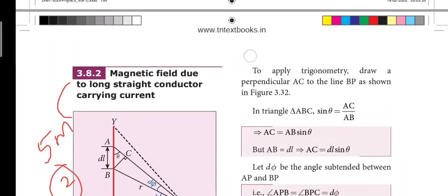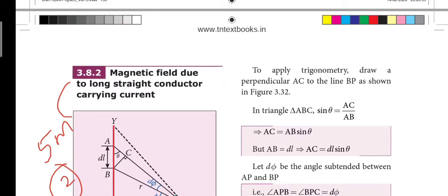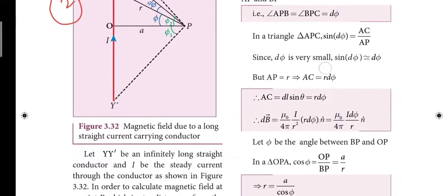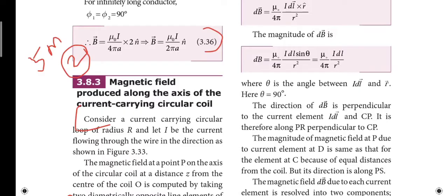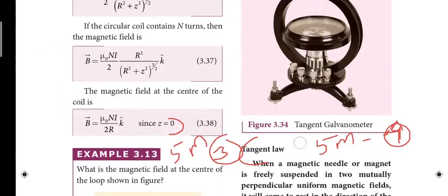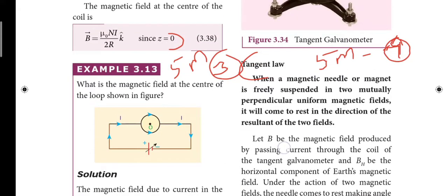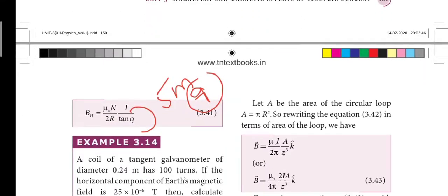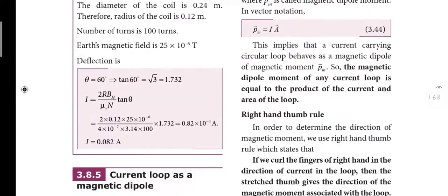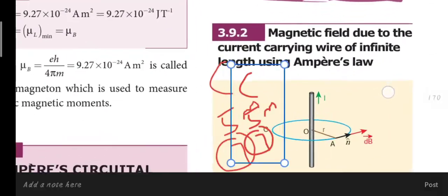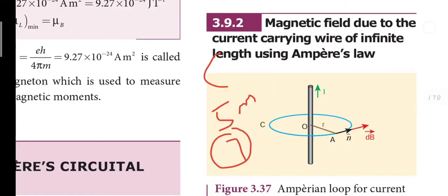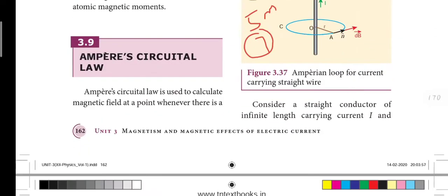The next important five-mark topics in this lesson are: straight conductor (with diagram and derivation), circular conductor carrying current (an important question and note), tangent law (a five-mark book-back question with derivation), and Ampere's circuit law (another five-mark question — question number 7).